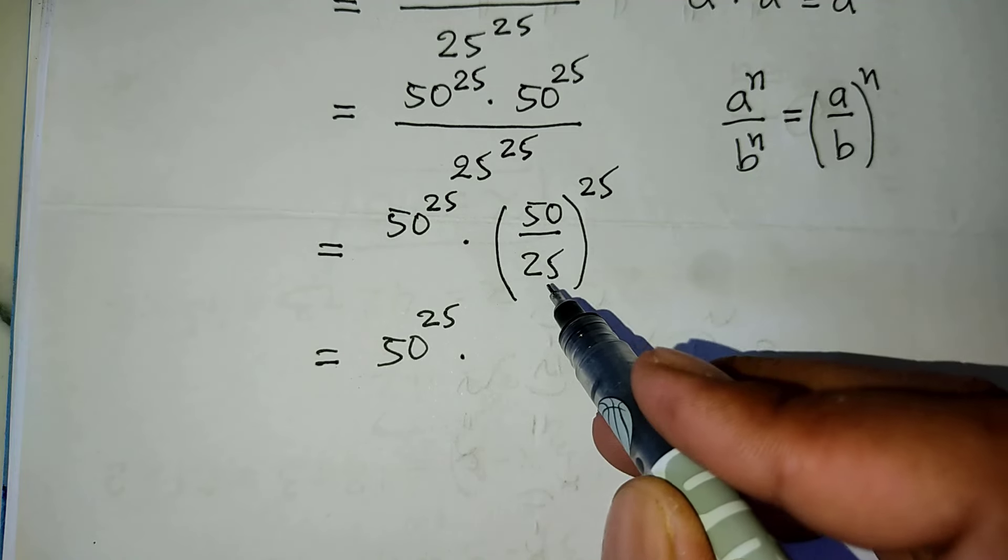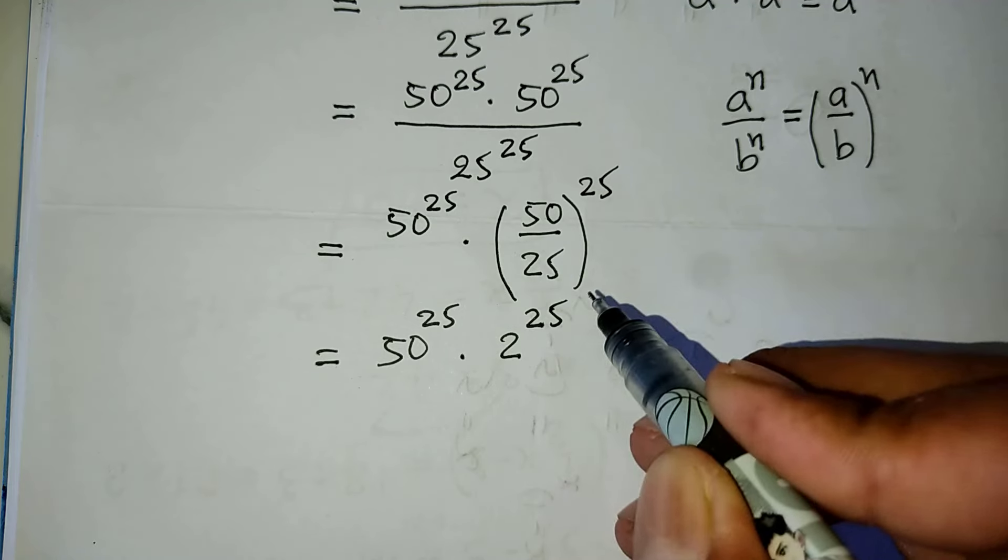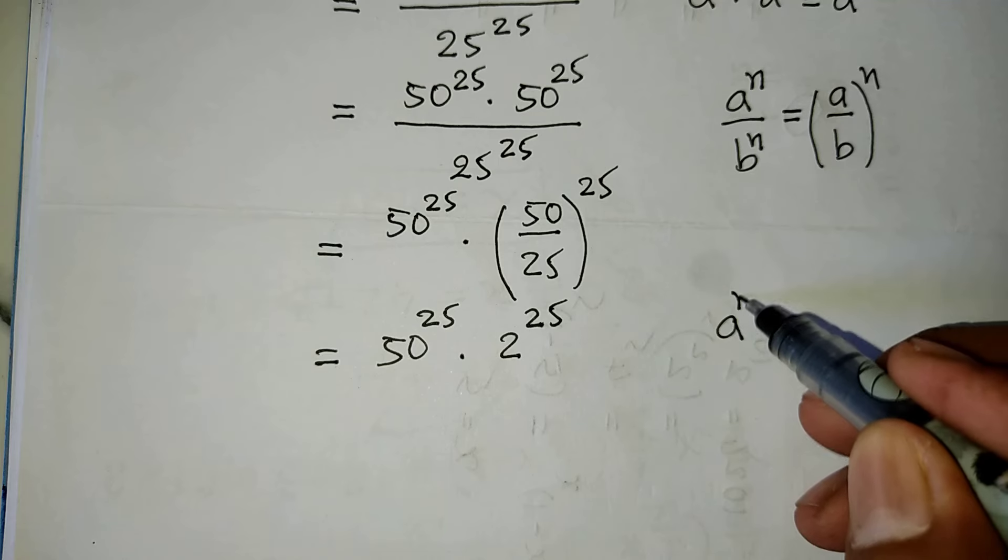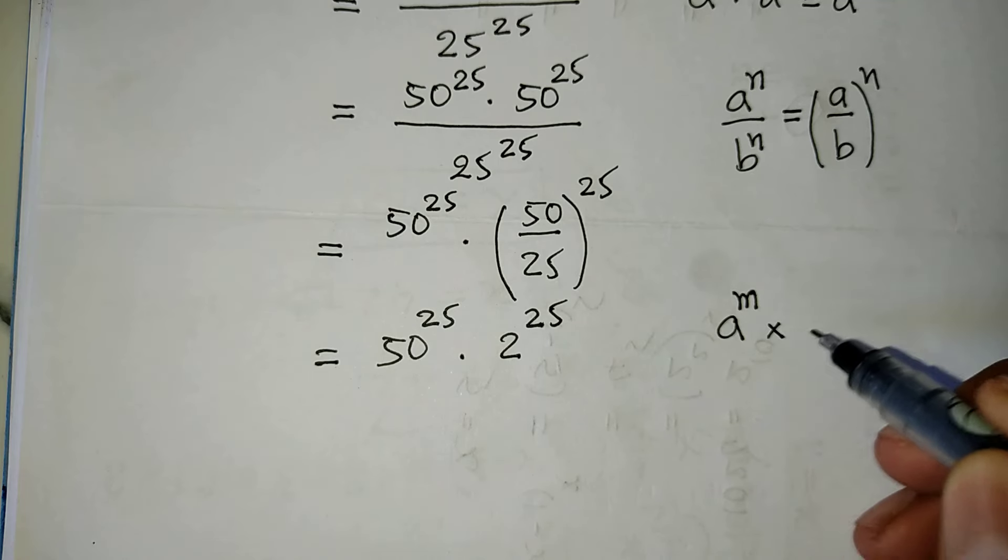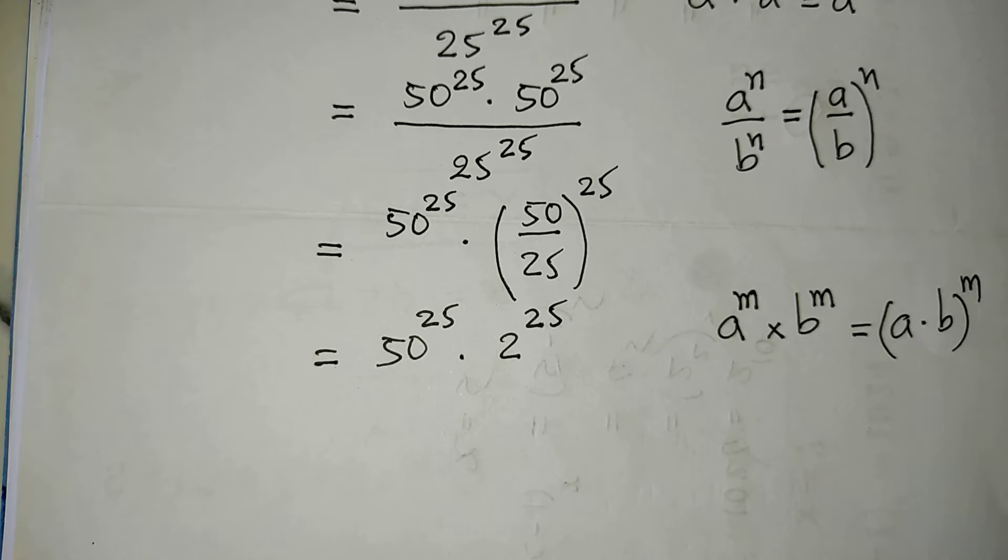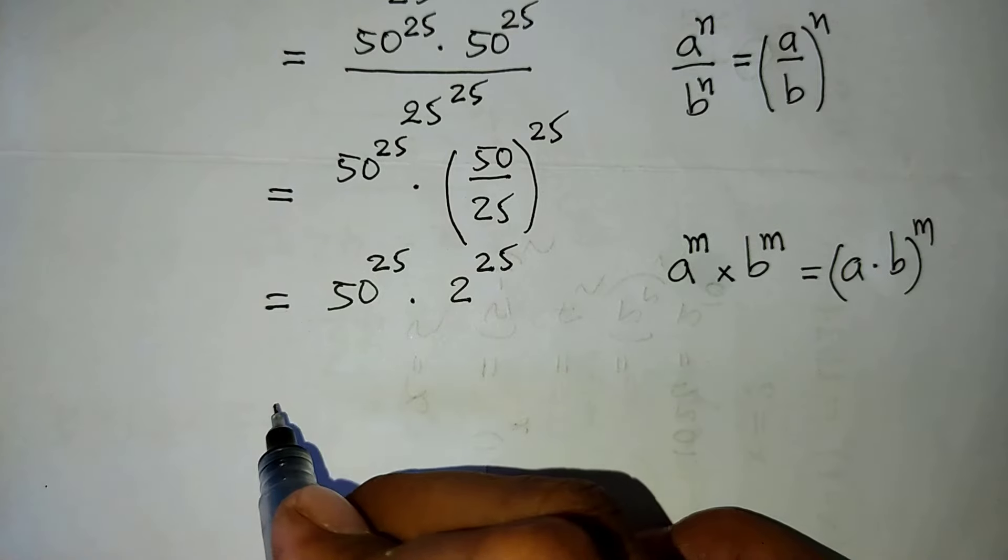We use the formula a to the power m times b to the power m equals a times b all to the power m. So now we get it's equal to 50 times 2 all to the power of 25.